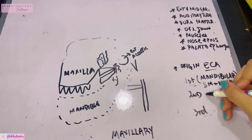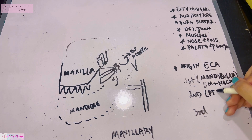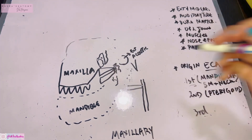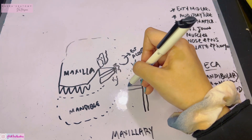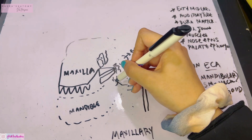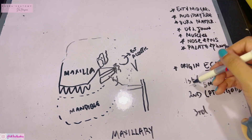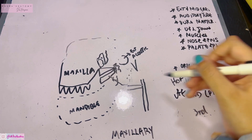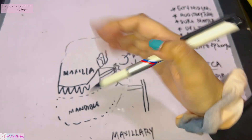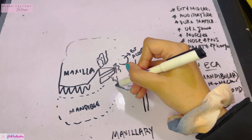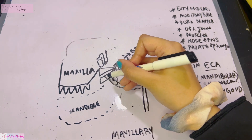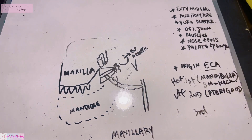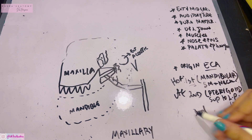The second part is known as the pterygoid part. It runs superficial to the lateral pterygoid muscle, and this time it runs upwards and forwards — unlike the first part which was horizontal. The second part specifically runs superficial to the lower head of the lateral pterygoid.